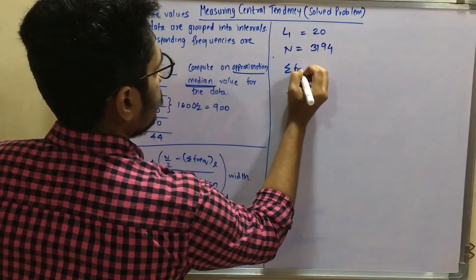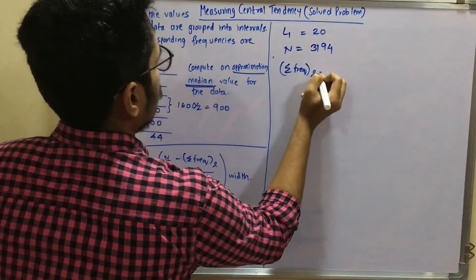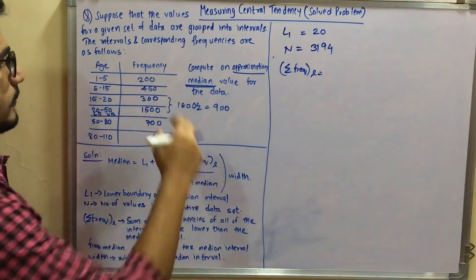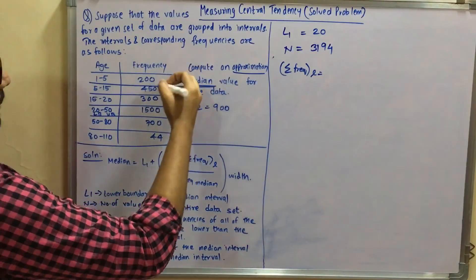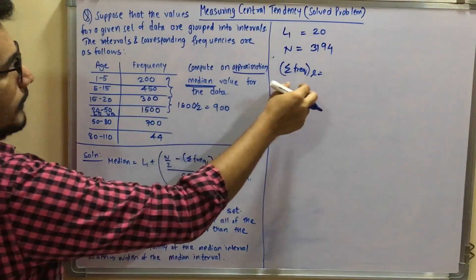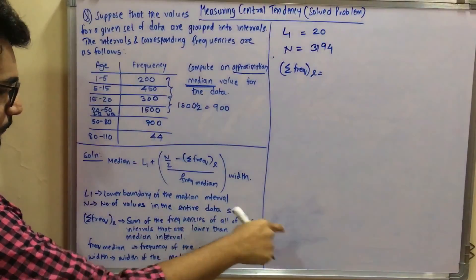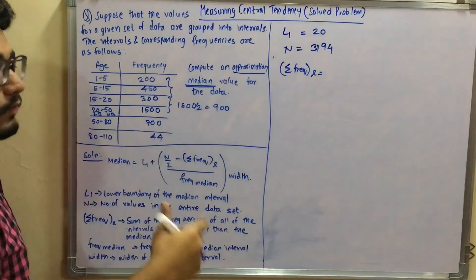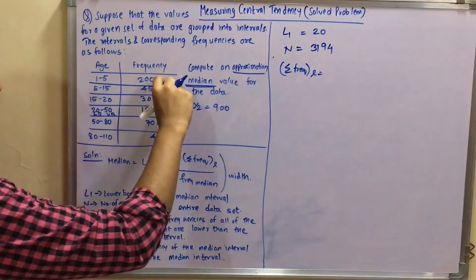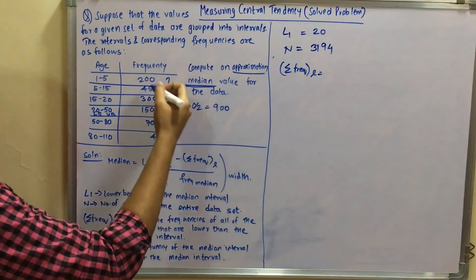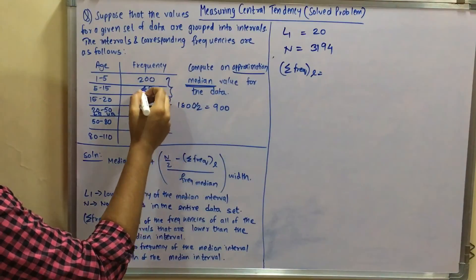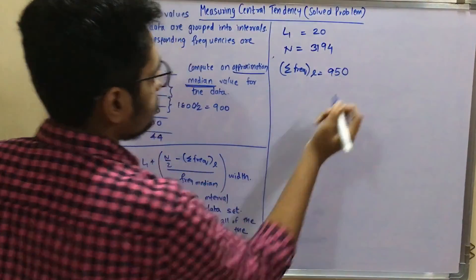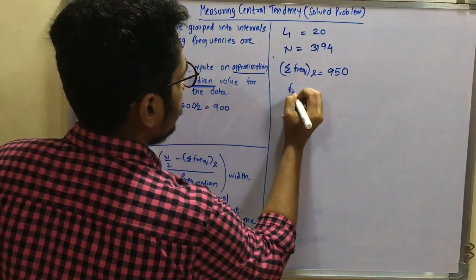Now we calculate the summation of frequencies of all intervals lower than the median interval. Our median interval has frequency 1500, so we sum all frequencies above it in the table — those below the median interval: 200 plus 450 equals 650, plus 300 gives 950. So the summation of lower boundary frequencies is 950.